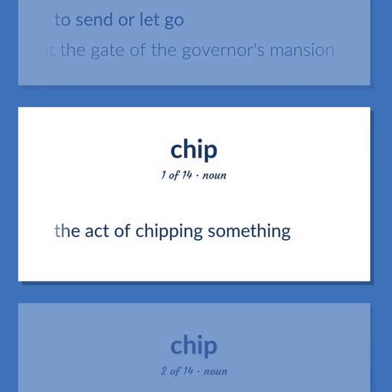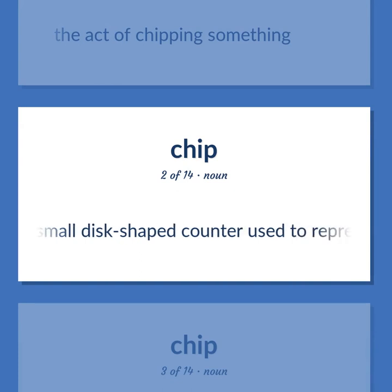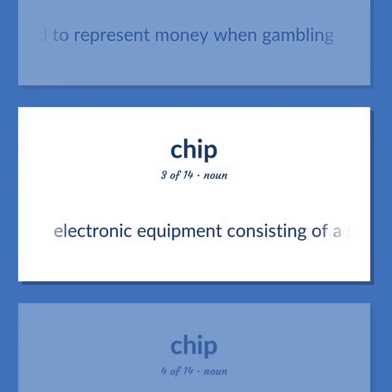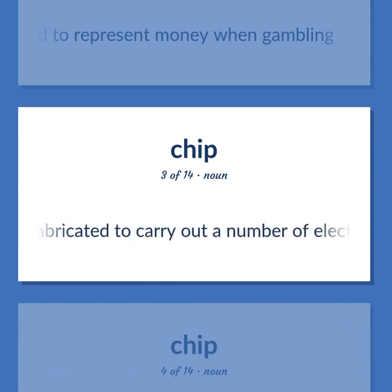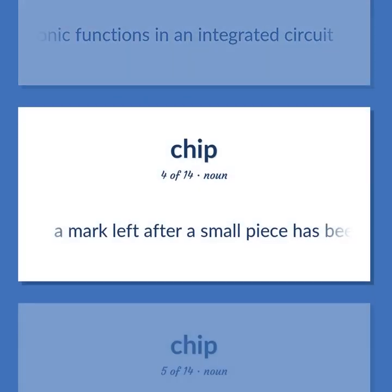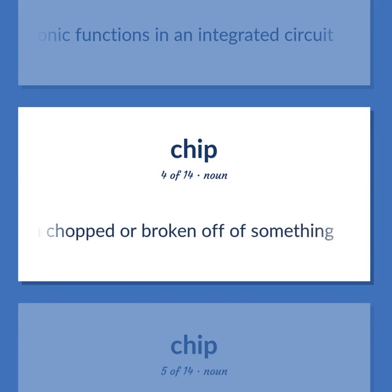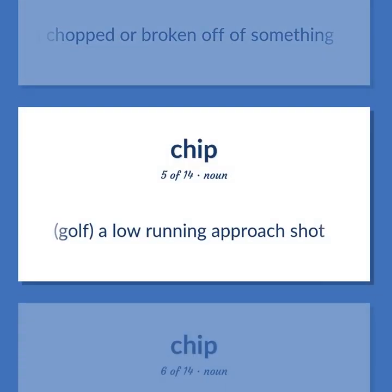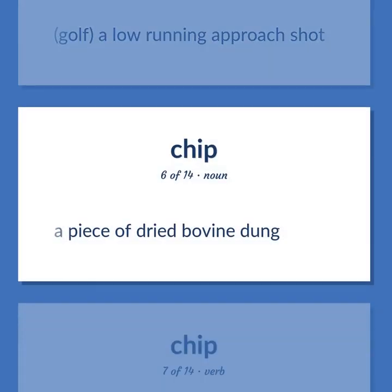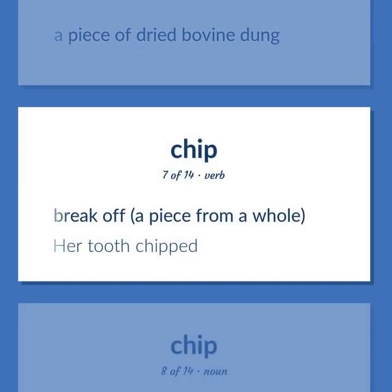Chip: The act of chipping something. A small disc-shaped counter used to represent money when gambling. Electronic equipment consisting of a small crystal of a silicon semiconductor fabricated to carry out a number of electronic functions in an integrated circuit. A mark left after a small piece has been chopped or broken off of something. Golf: a low running approach shot. A piece of dried bovine dung. Break off a piece from a whole. Her tooth chipped.